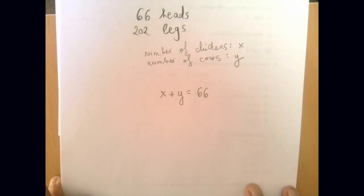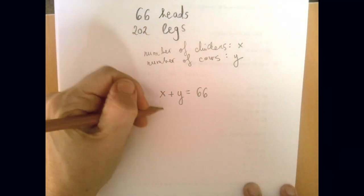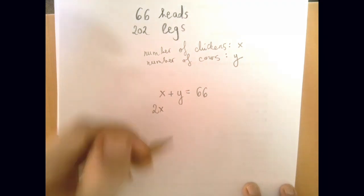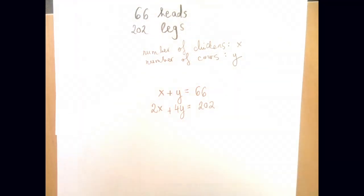Now each chicken has two legs, so x chickens altogether have 2x many chicken legs, and the number of cow legs would be 4y. And that's how we get 202.